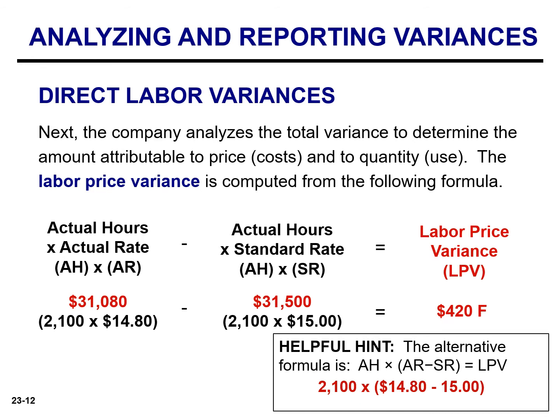The labor price variance can also be calculated by multiplying the actual hours worked by the difference between the actual pay rate and the standard pay rate. In this example, we take 2,100 and multiply that by the difference between the actual and the standard pay rate — in this case, 20 cents — to arrive at a favorable variance of $420. We know it's favorable because the actual pay rate of $14.80 is less than the standard pay rate of $15.